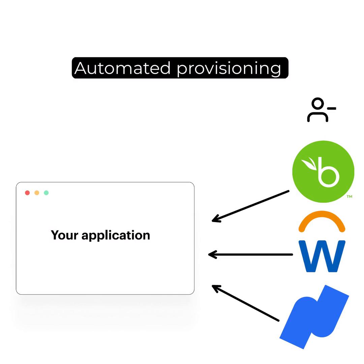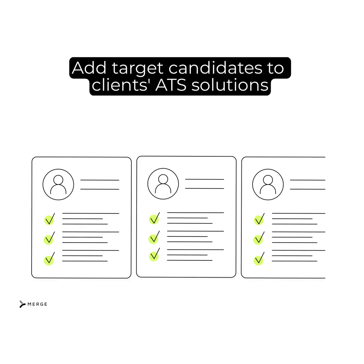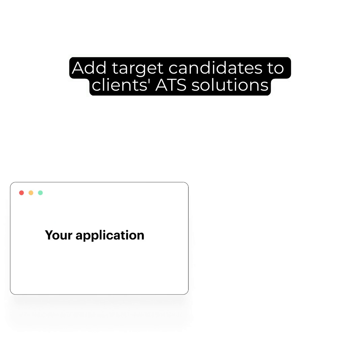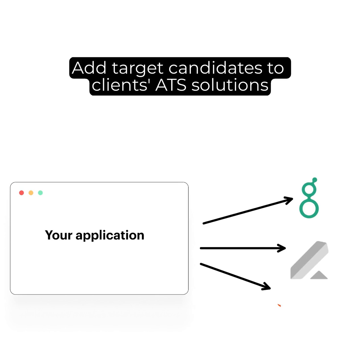If an employee leaves, they'll automatically be removed as a user in your product. If they join, they'll automatically get added and, based on their department and job title, be assigned a specific role. As our last example, let's say you offer a platform that helps clients identify and recommend target candidates for certain roles. To help your clients' recruiting teams find these candidates and begin reaching out to them, you can integrate your product with ATS solutions like Greenhouse, Lever, and Bullhorn, and allow clients to implement the following sync: anytime a candidate is recommended in your product, they're automatically added to the client's ATS solution.